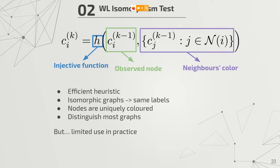If you have a function that takes the node information after several steps of the isomorphism test and computes some values, since nodes are uniquely colored you will have distinct information for each node — useful for determining node categories. This test can distinguish most graphs, not all, but in practice you use it anyway because even though it won't distinguish every possible combination of graphs, it handles the vast majority. However, the Weisfeiler-Lehmann test has limited practical use in graph neural networks because you are not just interested in whether two graphs are exactly the same, but also to what degree they are similar.